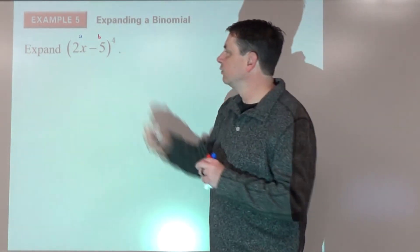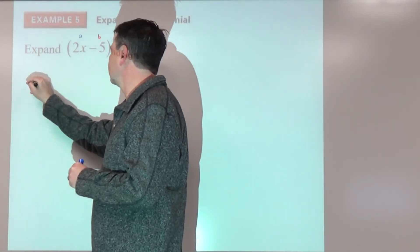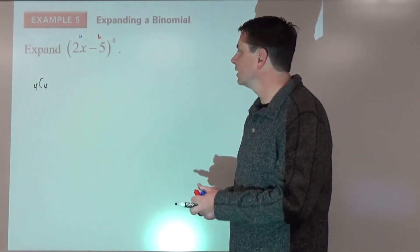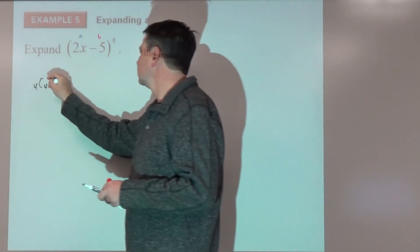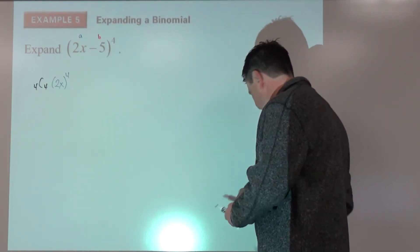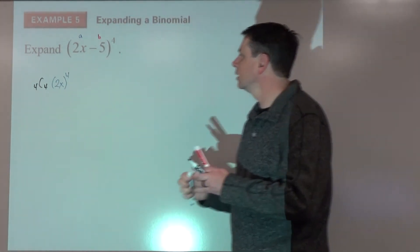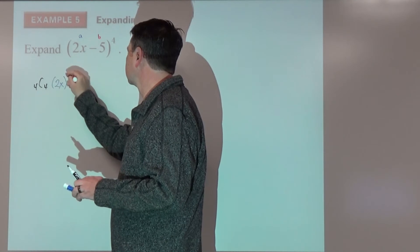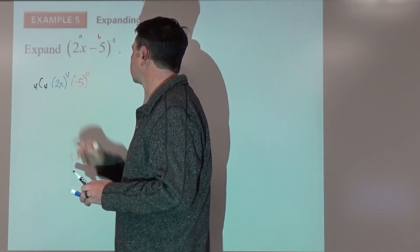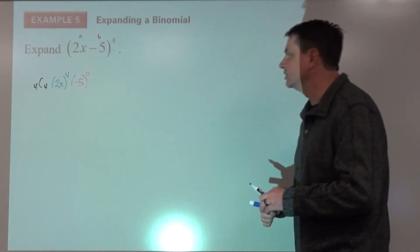So we start with a combination. It's now to the fourth power, so 4 choose 4, times a, which is now 2x, to the fourth power, times b, negative 5, to the zero power.